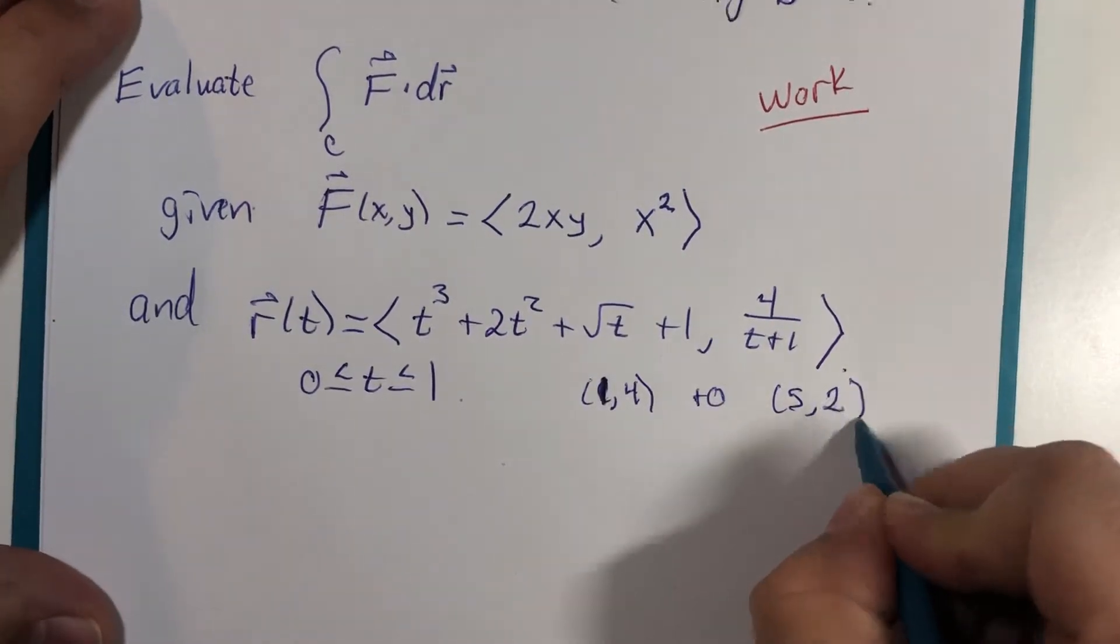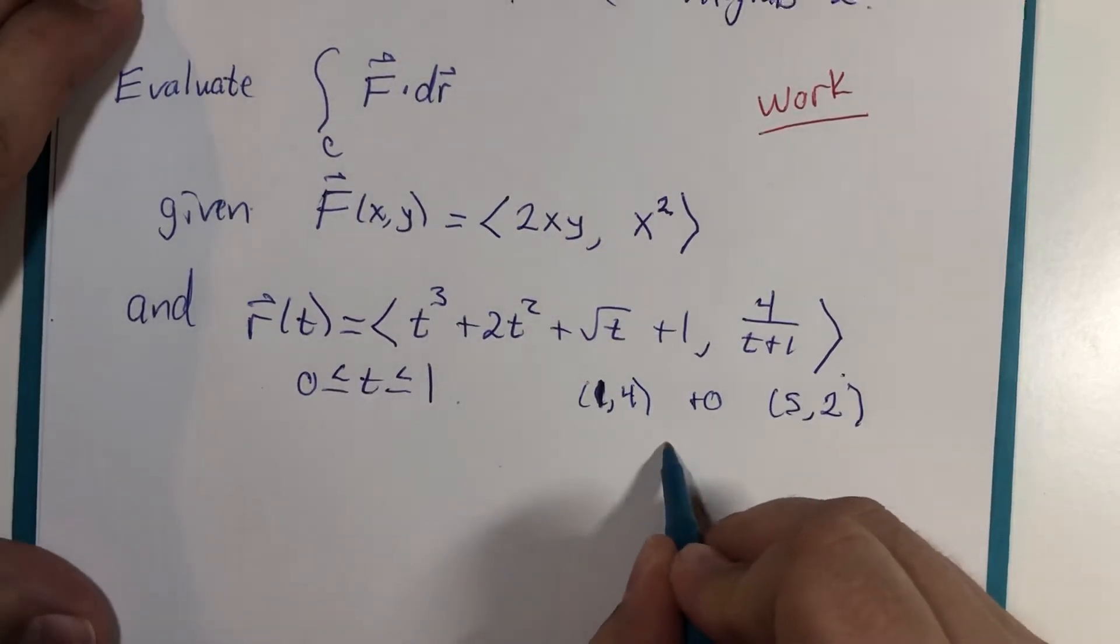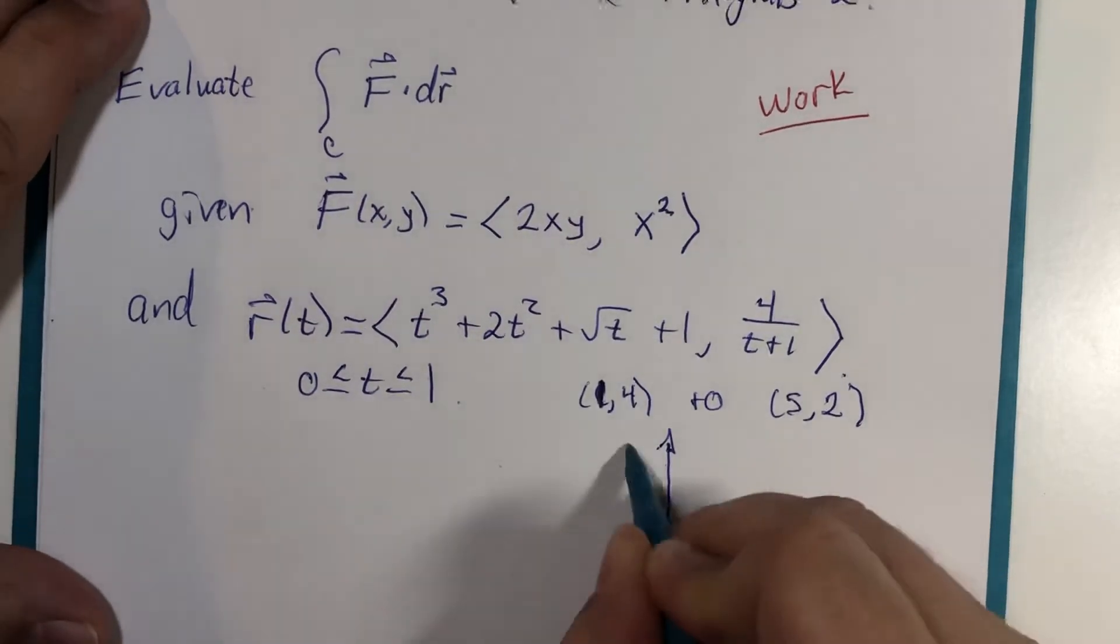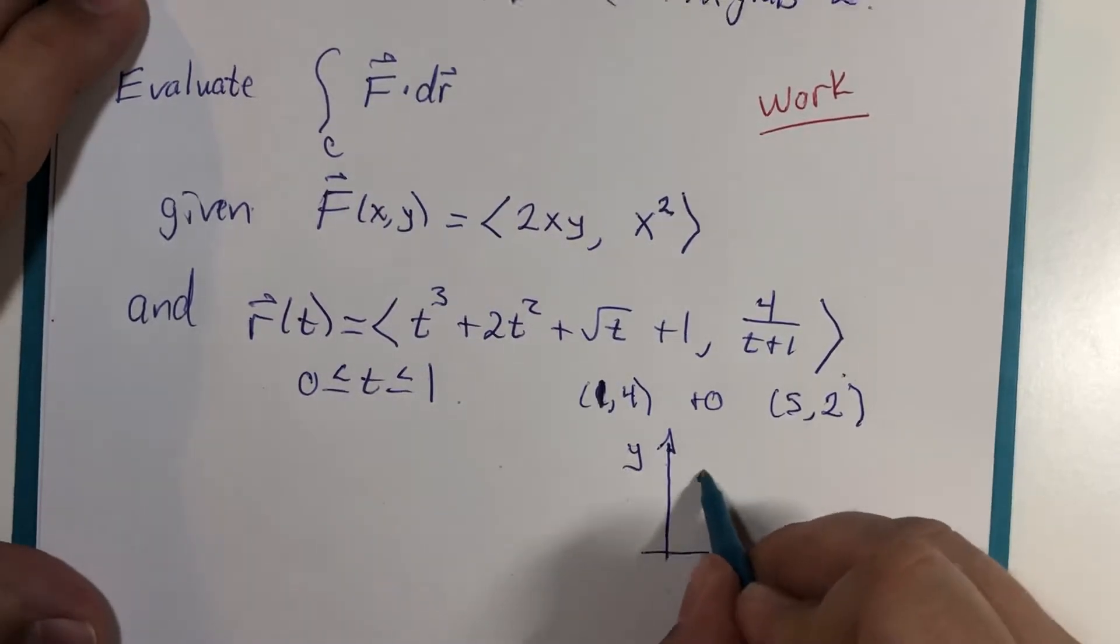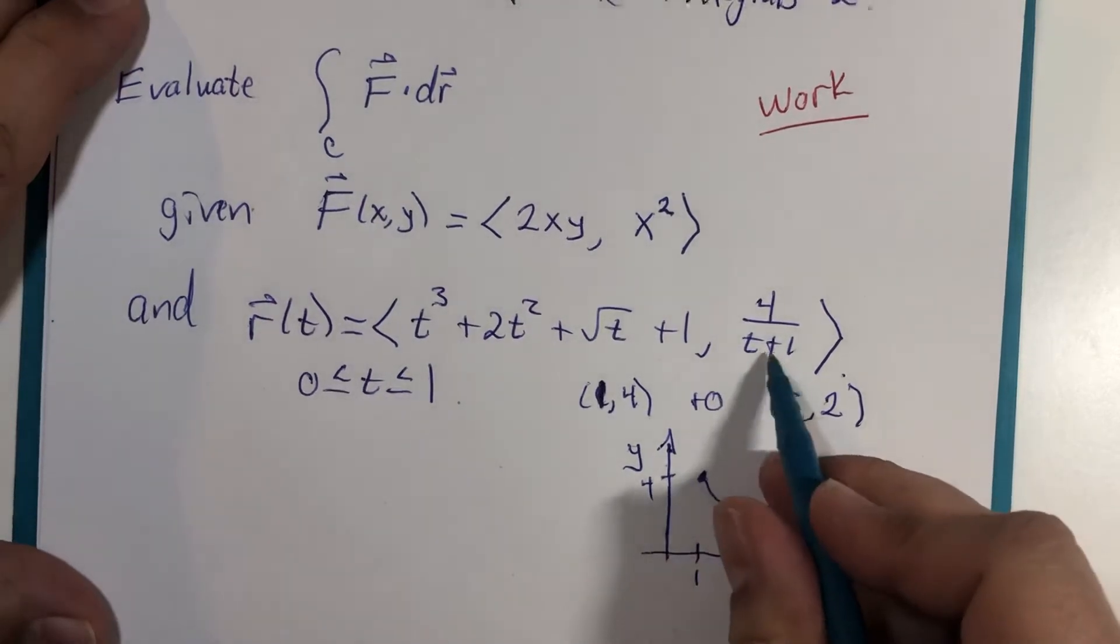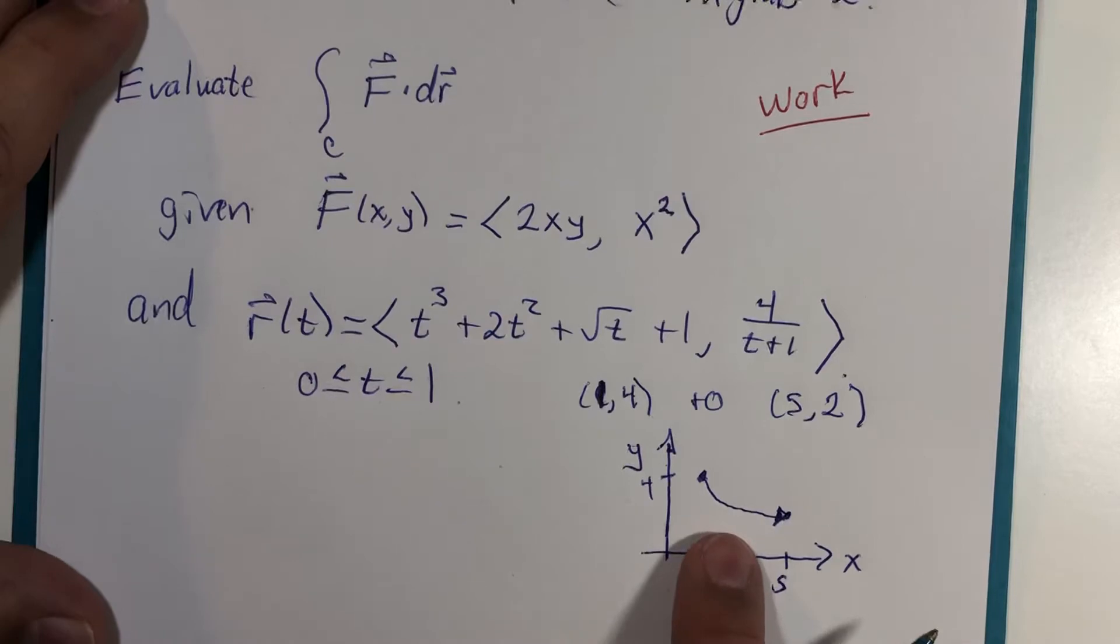What we're looking at is a curve that takes us from the point 1 comma 4 to the point 5 comma 2. And I suspect it looks something like this, but only a little bit because of my observation of this. But the fact of the matter is, we don't really want to have to plot all these points.